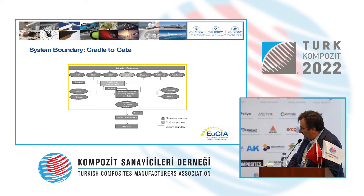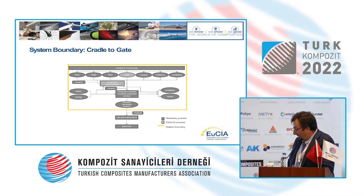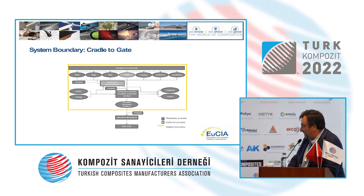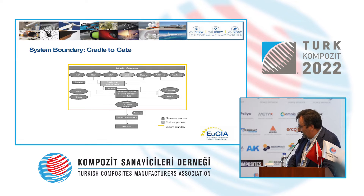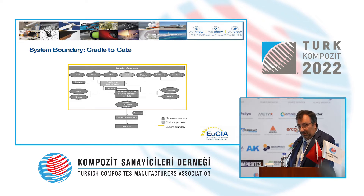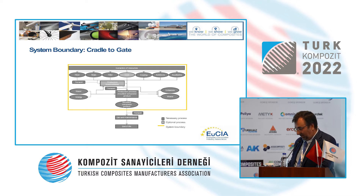The system boundaries include fibers, resins, fillers, core materials, coatings, additives, and auxiliaries. All those materials are combined in the production process, which involves water and energy consumption on one side and emissions and waste on the other. The composite part is then molded, and these form the boundaries of the analysis.